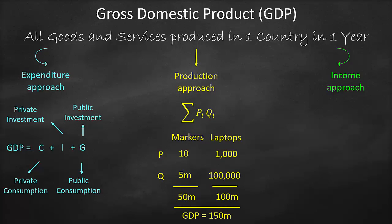Do we consume all our domestic production? Definitely not — we export part of it, so we need to add exports. And do we consume only domestic goods? No — we consume many imported goods, so we need to deduct imports. Exports minus imports are called net exports. Therefore, the GDP formula based on the expenditure approach is: Consumption + Investment + Government Spending + Exports − Imports.